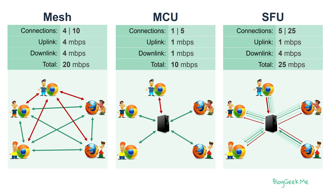With five participants there are going to be five connections for a total of 25 — each user will have five connections: one outgoing and four incoming. The uplink would be one megabit per second, similar to an MCU, and the downlink will be four megabits per second, similar to Mesh, for a total of 25 megabits per second.